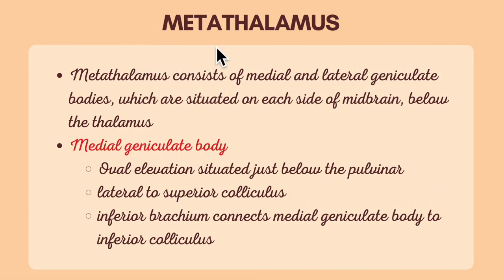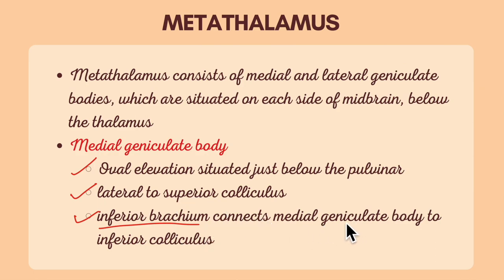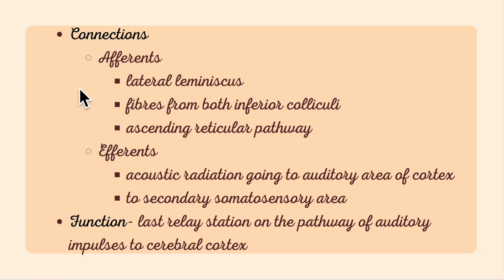Concising the important points learned under the metathalamus: the metathalamus consists of medial and lateral geniculate bodies situated on each side of the midbrain below the thalamus. The medial geniculate body is an oval elevation situated just below the pulvinar; it is lateral to the superior colliculus, and the inferior brachium connects it to the inferior colliculus. Its afferent connections include the lateral lemniscus fibers from both inferior colliculi and the ascending reticular pathway. Its efferents include the acoustic radiation going to the auditory area of the cortex and to the secondary somatosensory area. The function of the medial geniculate body is that it acts as the last relay station on the pathway of auditory impulses to the cerebral cortex.